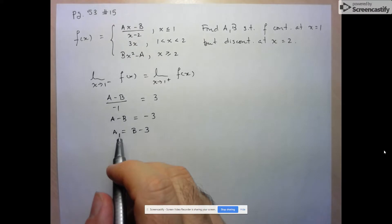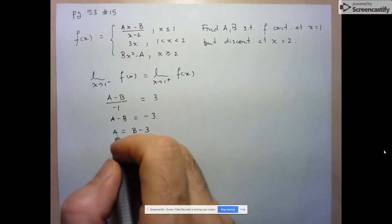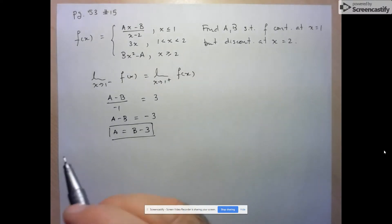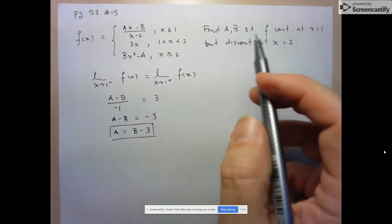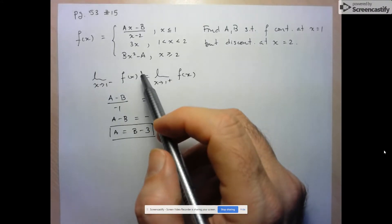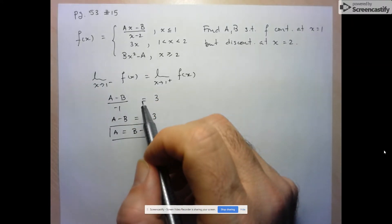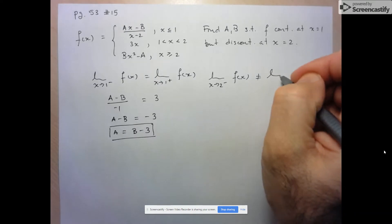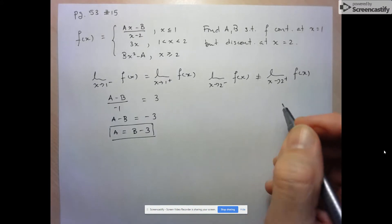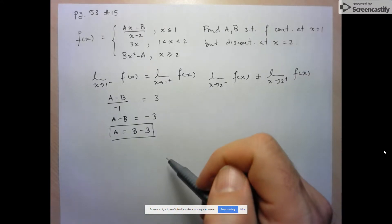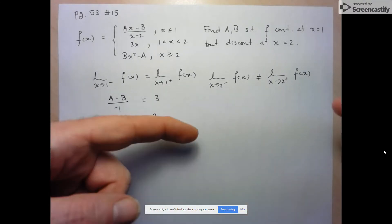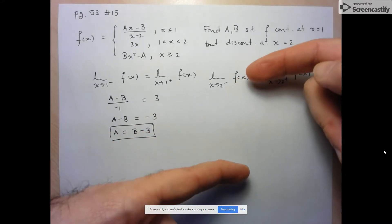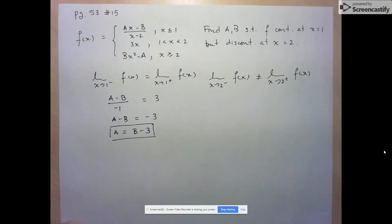So the first condition for continuity at 1 is that A equals B minus 3. Now let's look at the second condition. This question is a bit different from most of this format, because normally we'd want continuity at both values. Here, we want discontinuity at X equals 2. That means the limit as X approaches 2 from the left cannot equal the limit as X approaches 2 from the right. This suggests there are likely infinitely many answers, since there's probably only one scenario where the two functions meet exactly — creating a limit — but many scenarios where they don't, creating something like a jump.